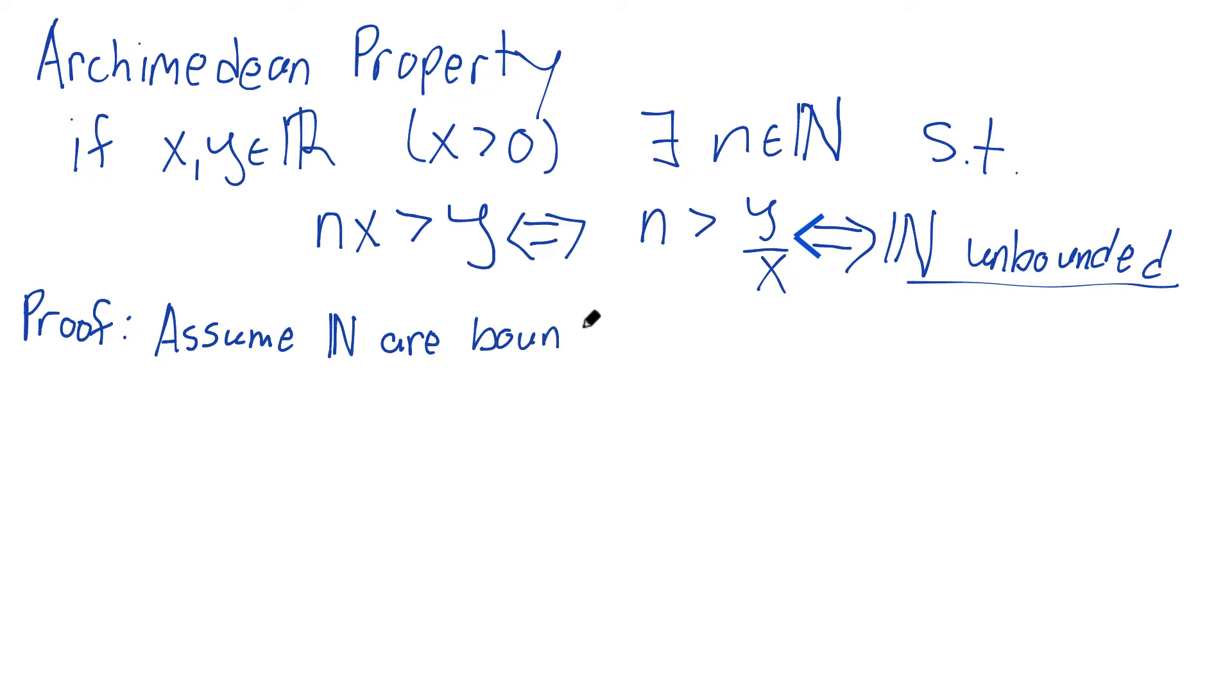I'm assuming that the natural numbers are bounded above. Let's assume they are, and we'll hopefully get a contradiction. Assume they're bounded above. Well, they're bounded above, and we know that the natural numbers are certainly non-empty, they're a non-empty set.